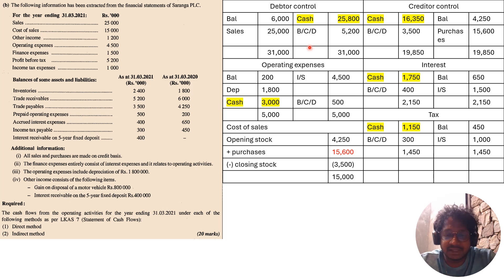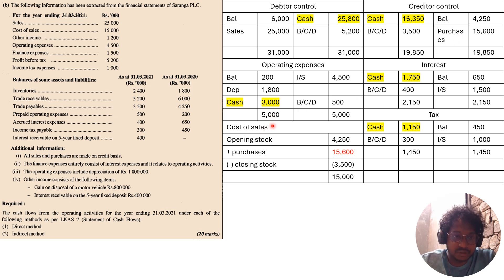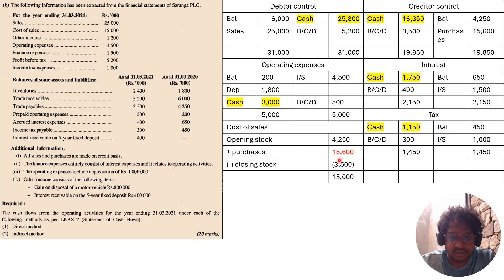From the debtors control account, you can find that you received 25,800 from debtors. When it comes to creditors, you first have to find out purchases. To find purchases, you use the cost of sales formula: opening stock plus purchases minus closing stock equals cost of sales. The cost of sales from the income statement is 15,000, and with the opening and closing stock given, you can find that purchases equal 15,600. You credit the creditors control account with purchases of 15,600.